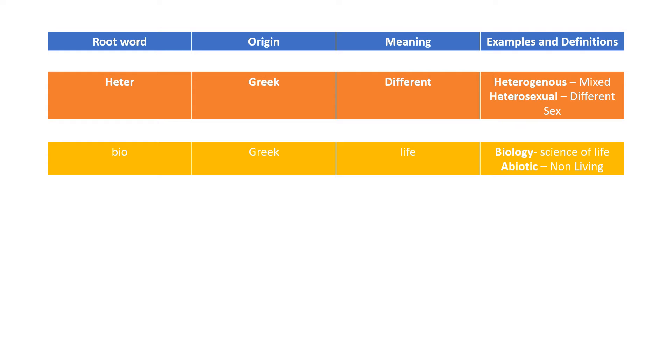Next is bio. It is a Greek origin word and it means life. For example biology means science of life. In the word abiotic, the letter A comes before biotic and A is also a root word which means against. So it means against the living, non-living.